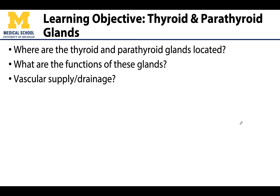Our major learning objectives for this lecture video will be to understand where the thyroid and parathyroid glands are located. We are also going to understand the functions of these glands — these are endocrine glands, and we'll understand what that means. And like most endocrine glands, the thyroid and parathyroid glands have a very robust vascular supply, so we will talk about which arteries supply and what veins drain.